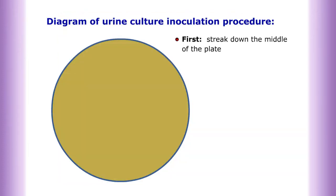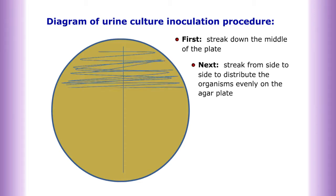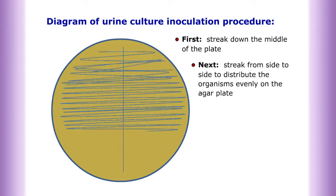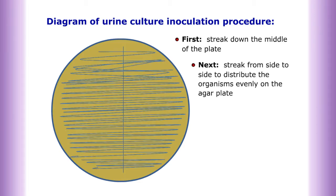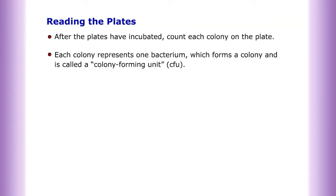Diagram of urine culture inoculation procedure: first streak down the middle of the plate, then streak from side to side to distribute the organisms evenly on the agar plate. Reading the plates: after the plates have incubated, count each colony on the plate.